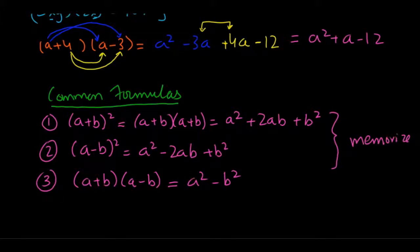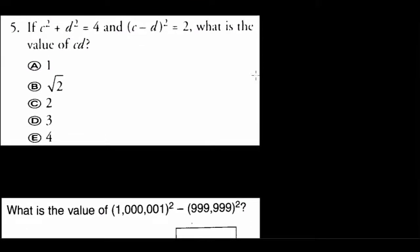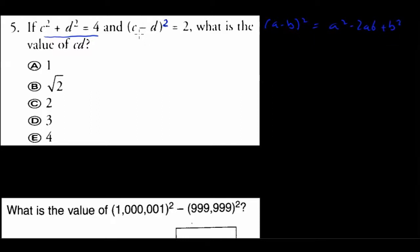Let's do a problem now. If c squared plus d squared is 4, and (c - d) squared is 2, what is the value of c times d? Using the formula we just covered, (a - b) squared equals a squared minus 2ab plus b squared, let's apply that here.